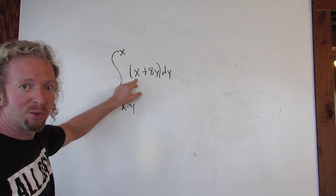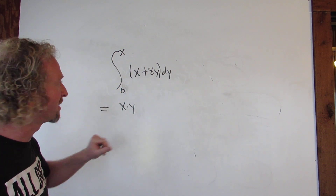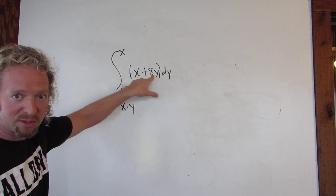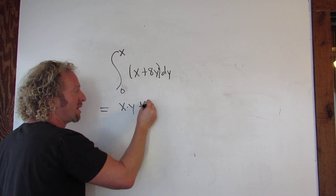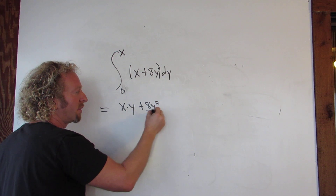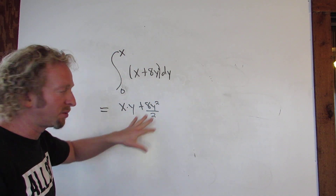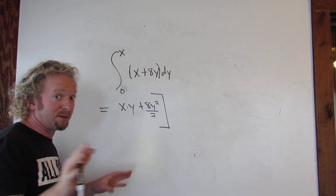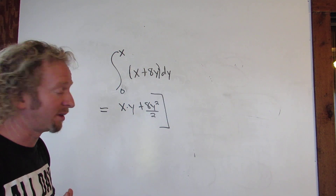For example, if it was 2, it would be 2y. So again, x is a constant, plus now we're integrating this with respect to y, so we use the power rule. So we get plus 8y squared over 2. And this is a definite integral, so we don't have to add an arbitrary constant or anything like that.